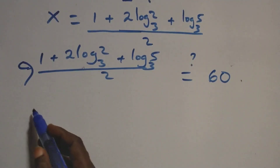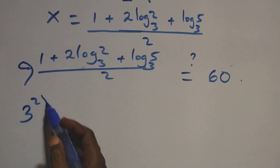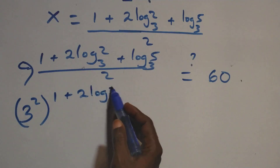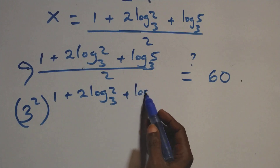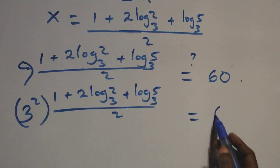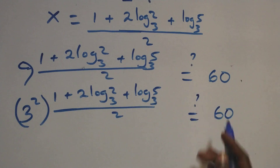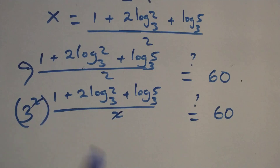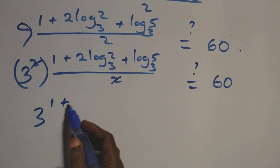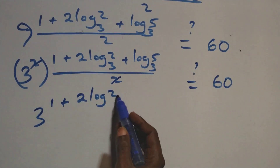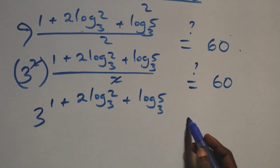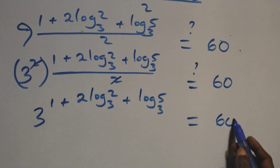We rewrite 9 as 3², so the expression becomes 3² raised to that power, which simplifies to 3 raised to the power (1 + 2·log_3(2) + log_3(5)).